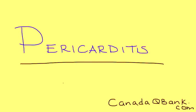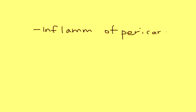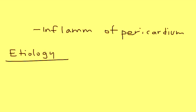Pericarditis is the topic. Pericarditis essentially is inflammation of that outermost layer of the heart known as the pericardium. The reason this happens is really a wide range of reasons, but the two most common are idiopathic and some sort of infection, usually viral.